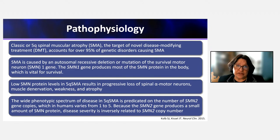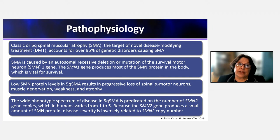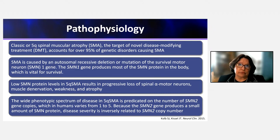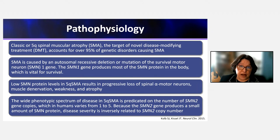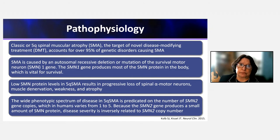With a single genetic defect, how does SMA comprise such broad phenotypic diversity from infants to adults? The answer is the SMN2 gene — a paralogous gene that produces a protein which is non-functional because it is missing exon 7. However, a small portion of SMN2 transcripts are alternatively spliced to include exon 7, producing full-length SMN protein. SMN2 copy number, which varies from 1 to 5 in humans, modulates the phenotype as a disease modifier inversely related to severity.